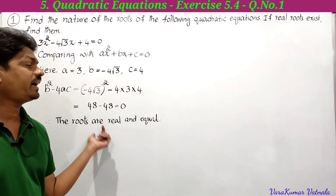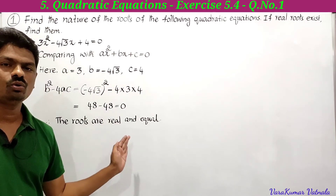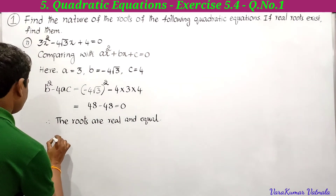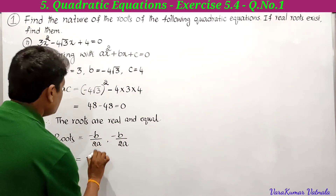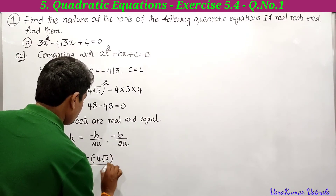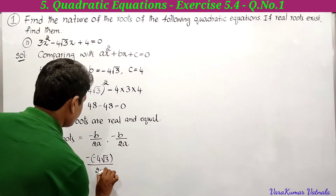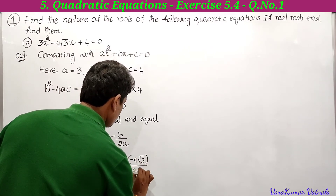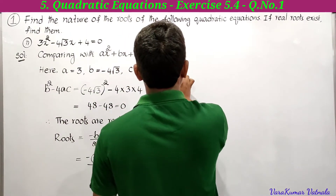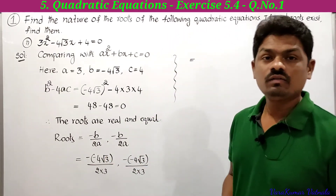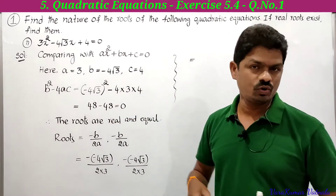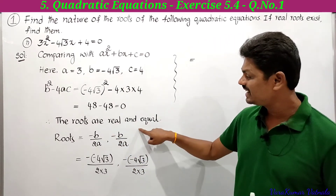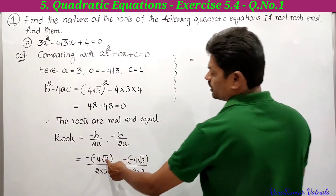Since b²-4ac = 0, the roots are real and equal. We must find them. The formula for equal roots is: roots = -b/2a, -b/2a. Substituting b = -4√3 and a = 3, both roots equal -(-4√3) / (2×3) = 4√3/6.